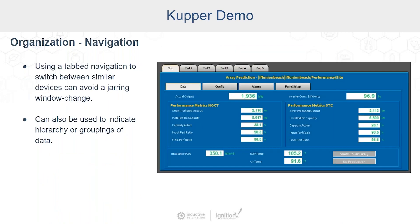Navigation features inside of a window can be restricted, keeping the user within the same window when possible. A tab interface can be used to indicate a hierarchy within a given context. This screen allows selecting the performance model for an inverter section and then swapping between the model's data, its configuration, alarm settings, and solar panel setup.